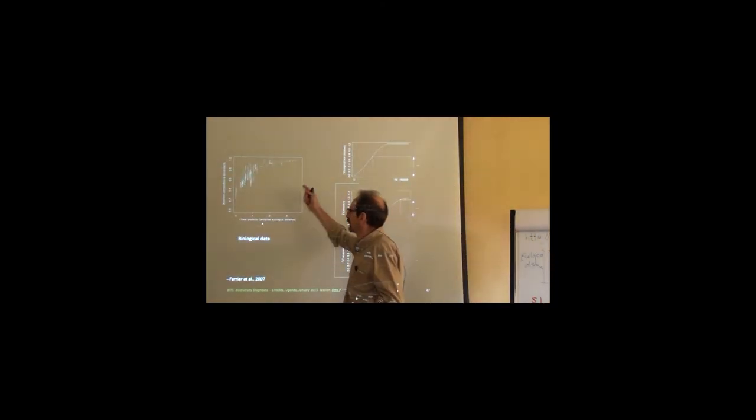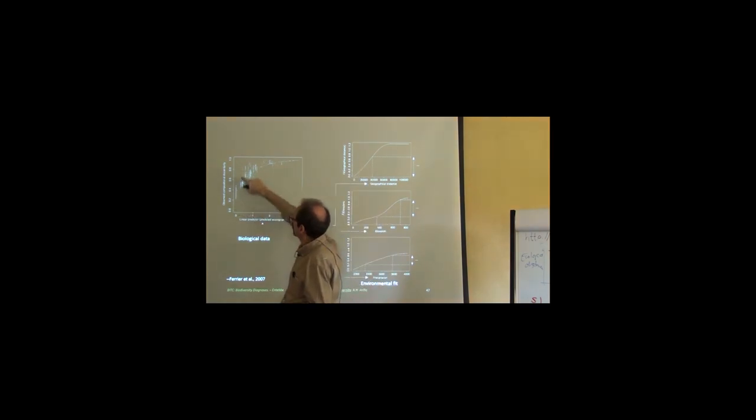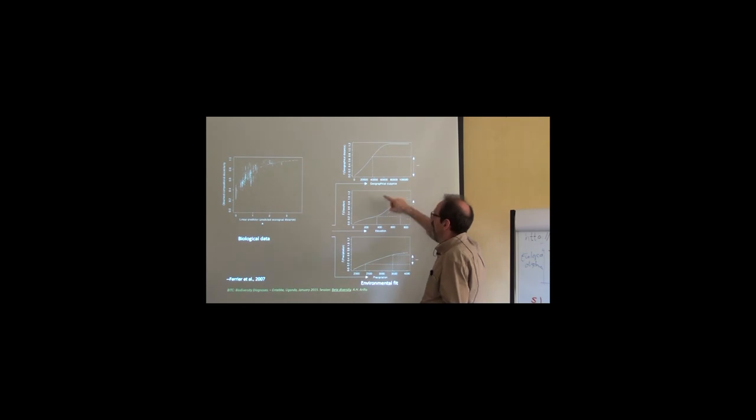So basically, this is what the model looks like. You get a linear predictor and you have an observed compositional dissimilarity. And then the model will give you a set of predictors that can be applied to the model which, rather than linear, are curvilinear. And the form of this curve is exactly what the GDM calculates. So it calculates a function which is not linear, a function that is corrected by the matrix function.